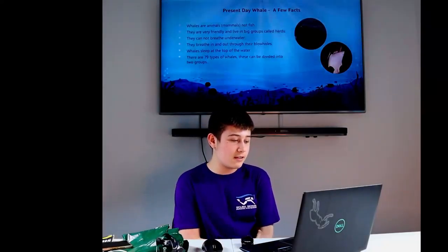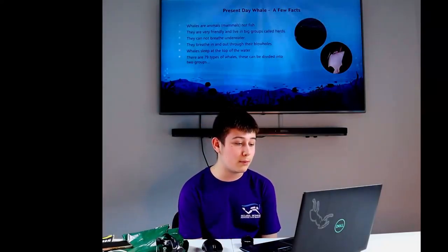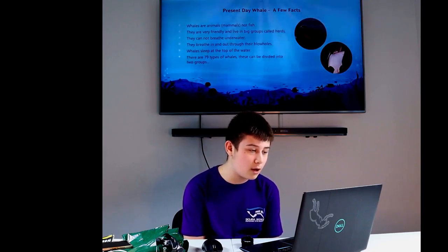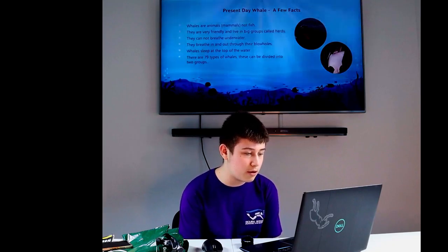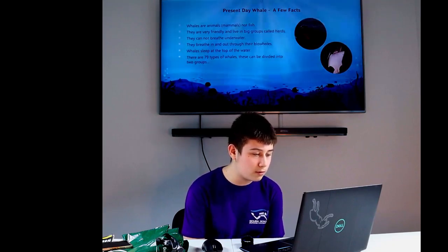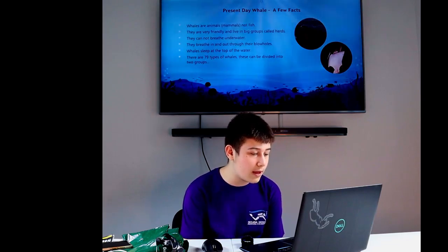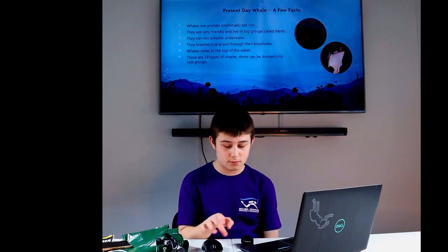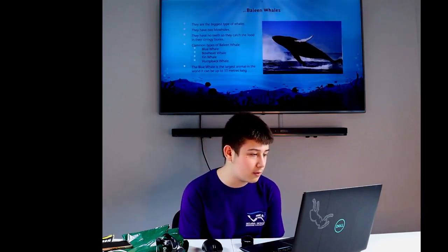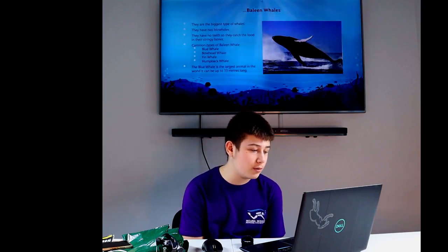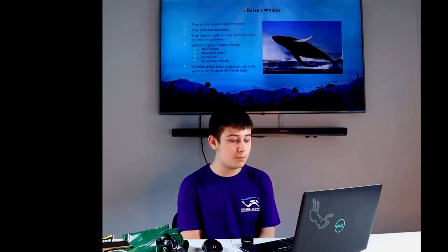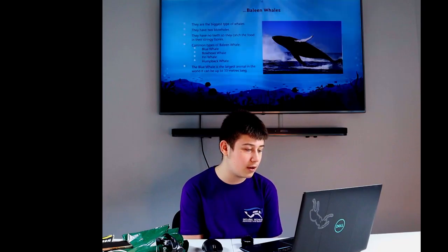Present day whales, a few facts: Whales are animals, mammals, not fish. They are very friendly, live in big groups called herds. They cannot breathe underwater. They breathe in and out through their blowholes. Whales sleep on top of the water. There are 79 types of whales. These can be divided into two different groups. Baleen whales: They are the biggest types of whales. They have two blowholes. They have no teeth and catch food in their stringy bones. Common types of baleen whales: blue whale, bowhead whale, fin whale and humpback whale. The blue whale is the largest animal in the world. It can be up to 33 meters long.